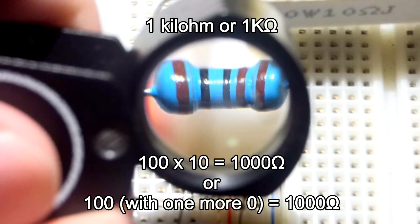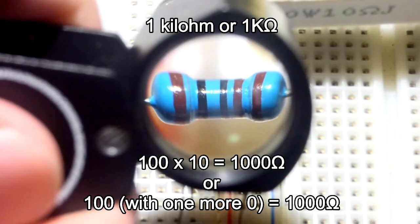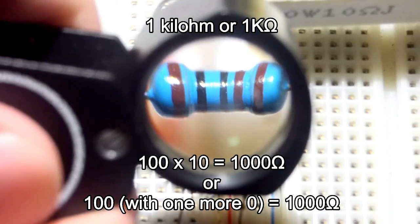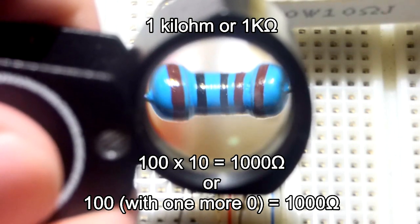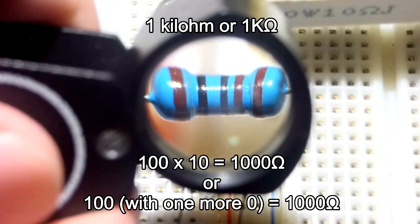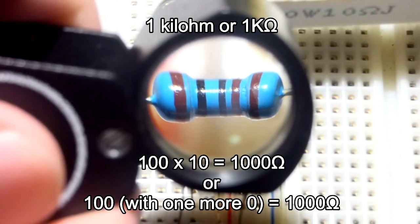So here we have, those are brown, kind of looks red on my end, but hopefully it looks better when I process this. We got 1, 0, 0, and then 1. So that's one more 0, or you can think of it as a multiplier of 10.